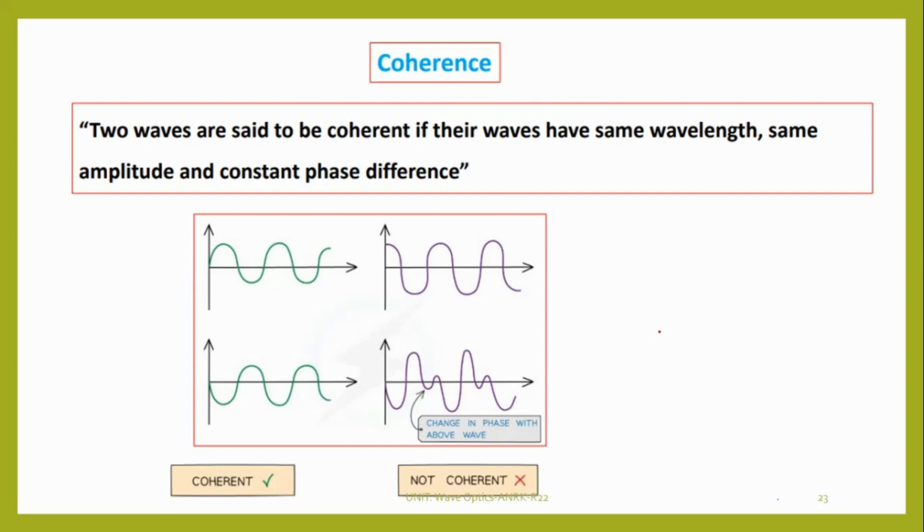What is coherence? Coherence is very simple. Whenever we say two waves are coherent, they should have same wavelength, same amplitude, and constant phase difference.